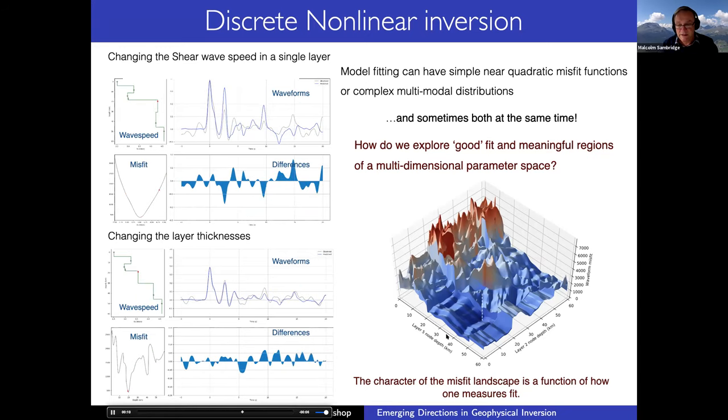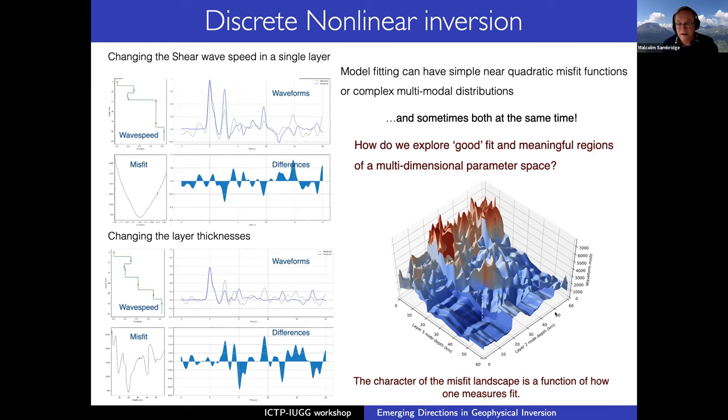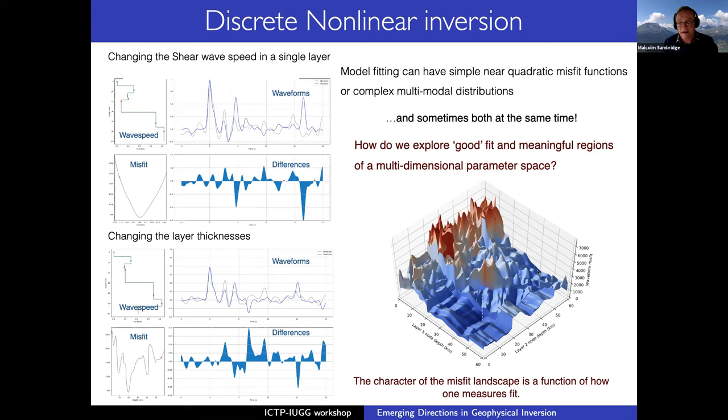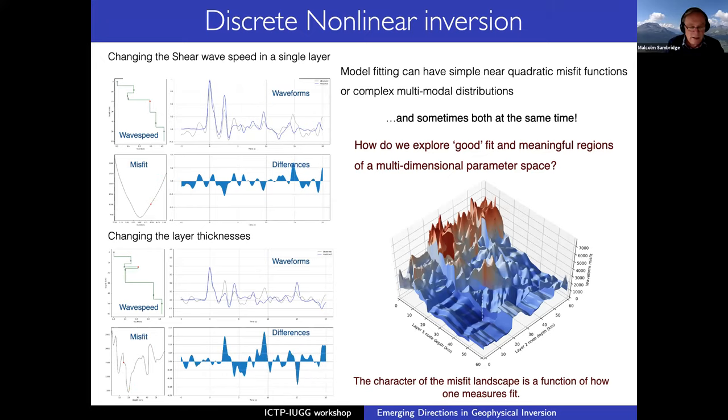And on the right hand side, you see the same thing as on the left, but there's a function of two layers, you see two layer thicknesses. And you see these enormous mountains of insignificance behind that can make optimization very difficult. The white area in the foreground is where the global minimum is. So dealing with this type of class of problem, as we vary two, three, four, or as many unknowns as we want, becomes exceedingly complex. The character of the misfit landscape is a function also of how we measure the fit to the data. So this is what I mean by a highly non-linear problem.